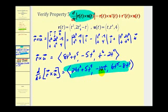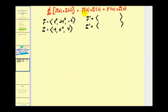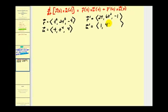To evaluate the right side we need to find the derivatives of vector valued functions r and u. The derivative r prime is: two t, six t squared, and negative one. The derivative u prime is: one, four t to the third, and zero.